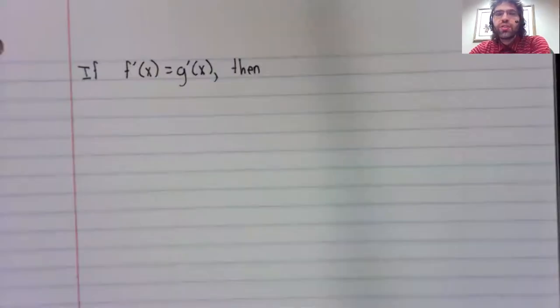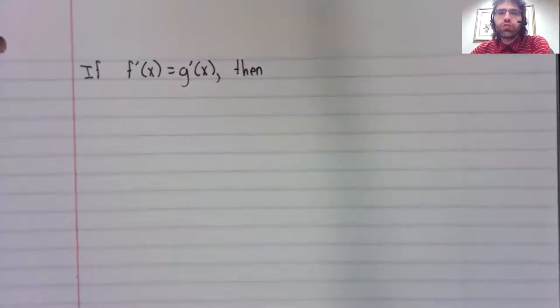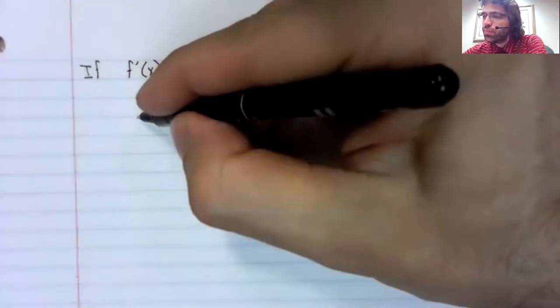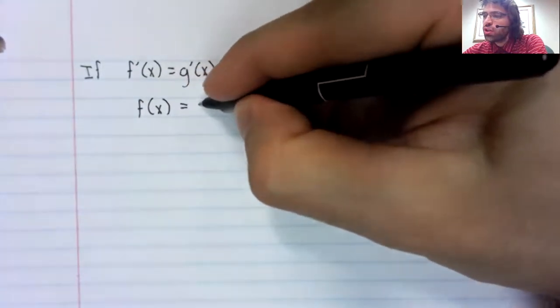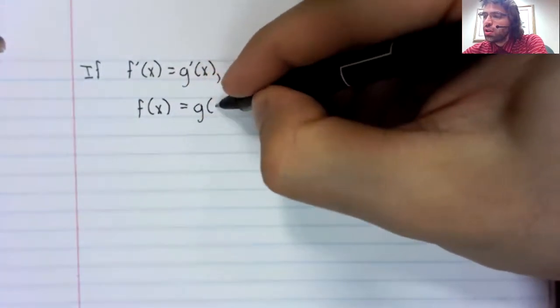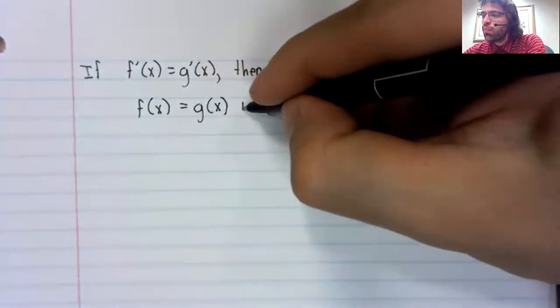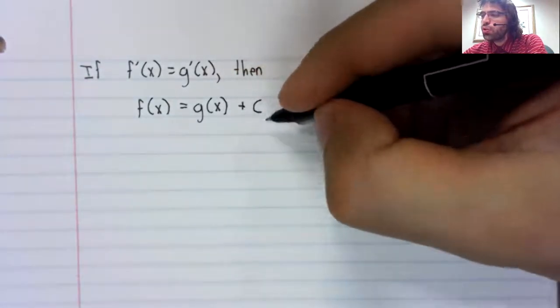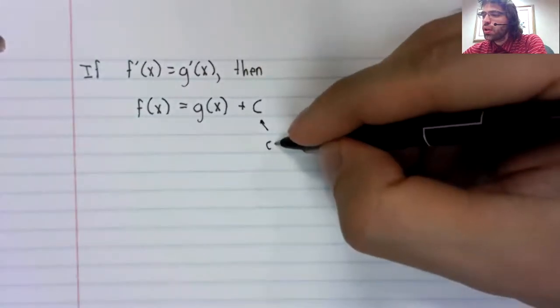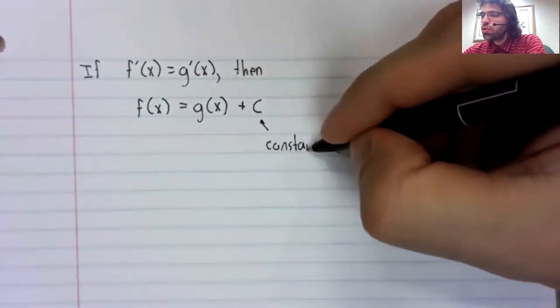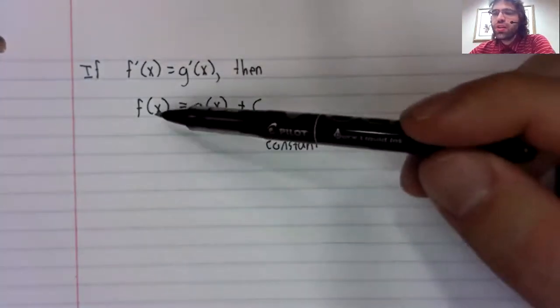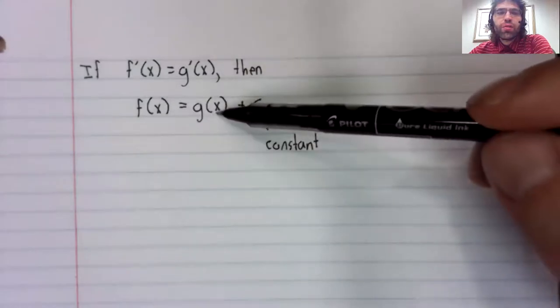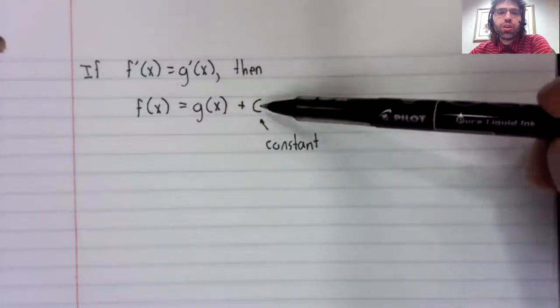All it says is that if two functions have the same derivative, then those functions are equal up to a constant. That is to say, one of these functions is the other function, plus a constant.